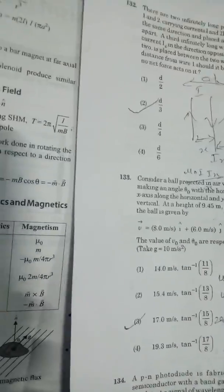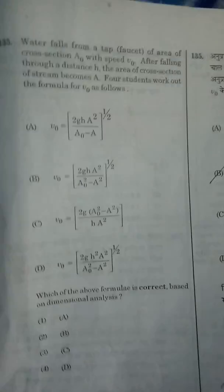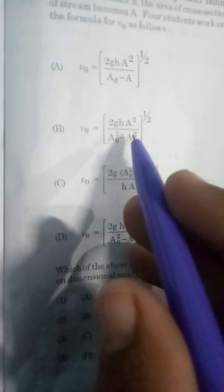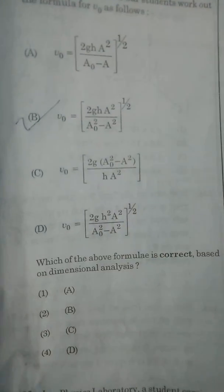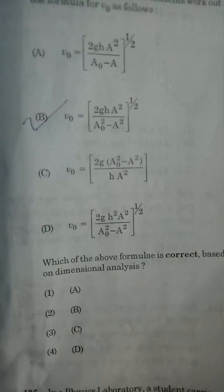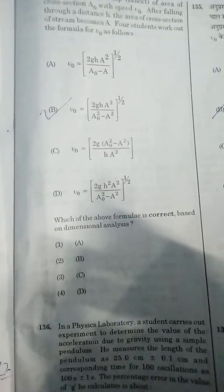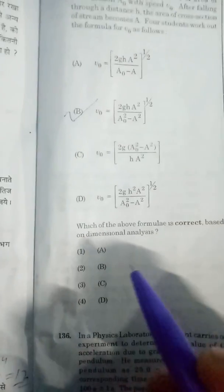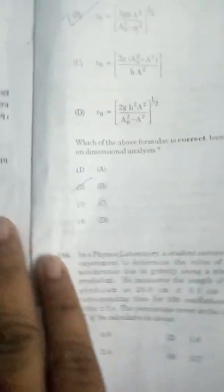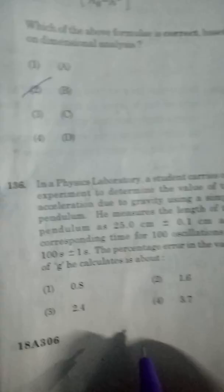In questions 134-135, the dimensionally correct equation is option number 2. gh has length² dimension under the root, which is the dimension of velocity. Correct option is option number 2.